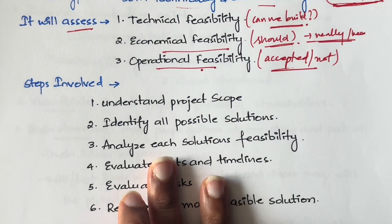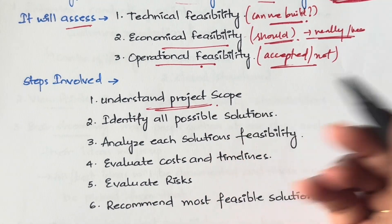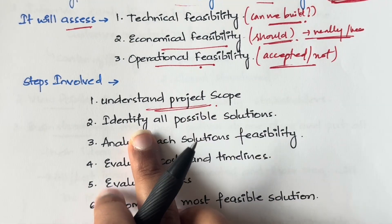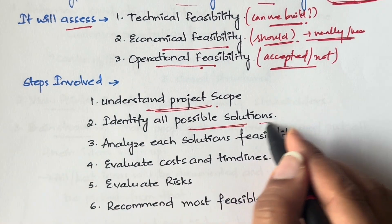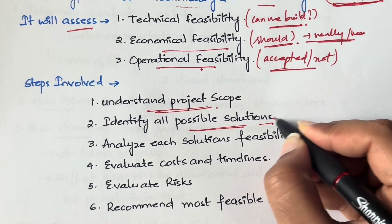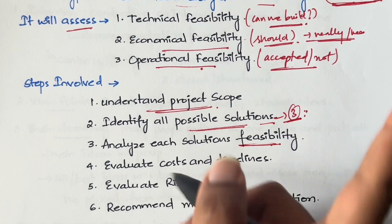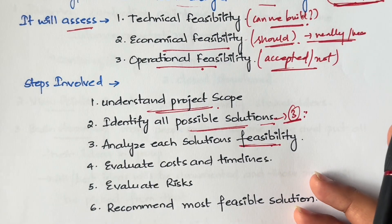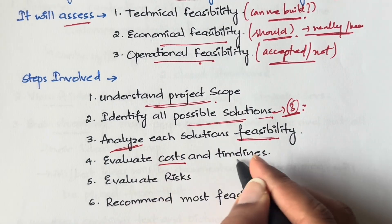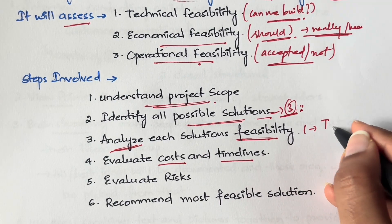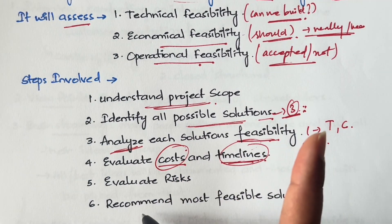The steps involved in a feasibility study are: first, understand the scope of the project. Next, come up with all possible solutions for the given problem. For each solution, analyze all feasibilities — technical, economical, and others. Then evaluate the cost and timeline for each solution — how much time and how much cost is required for each one.